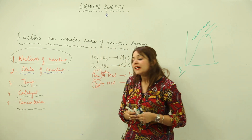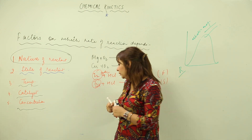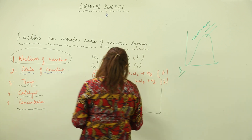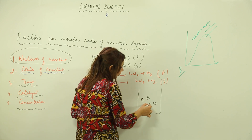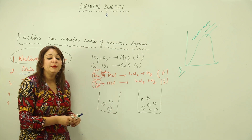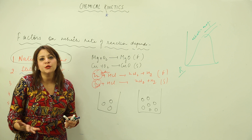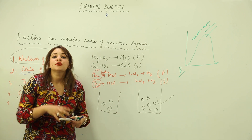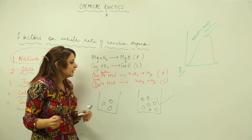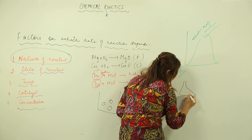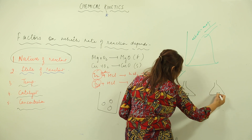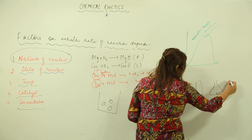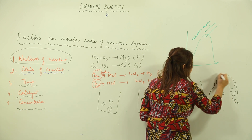The fifth factor is concentration of reactants. Suppose I have one beaker with three reactant molecules and another beaker with many reactant molecules. In the beaker with higher concentration, the collision frequency will obviously be more, so the rate of reaction will be faster. For example, consider two flasks each containing zinc — one with 10 molar HCl solution and another with 20 molar HCl solution.